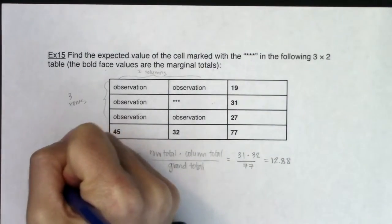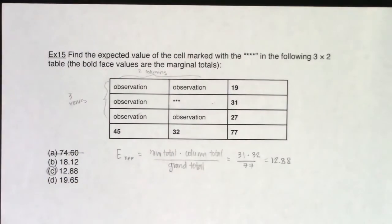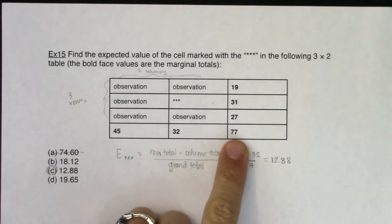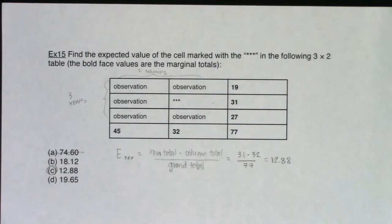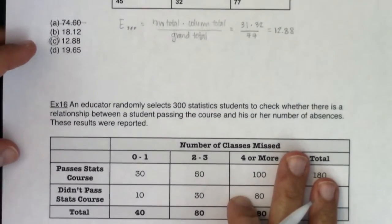Now if I was just doing this problem and I couldn't remember the formula, I would rule out A. A is way too large. If you only have 77 people or 77 widgets or animals or trees, if you only have 77 observations in your sample in total, it's almost impossible for one of them to have an expected count of 74. That's almost all of your sample. Alright. So with that, let's take a look at example 16.